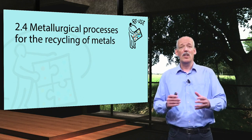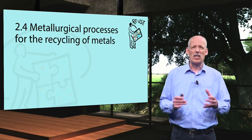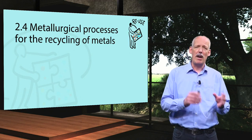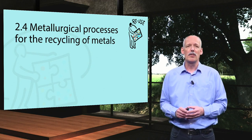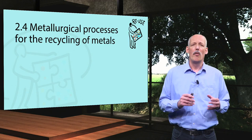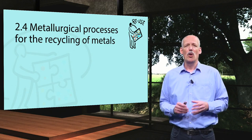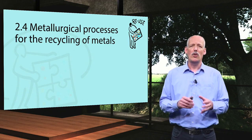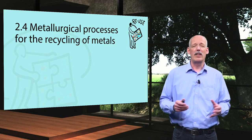Old scrap, such as scrap from end-of-life products, is quite complex scrap. This scrap can be refined via pyro, hydro and electrometallurgical methods, as discussed in this video. For metal containing waste and residues, both pyro and hydrometallurgical technologies are used, and their combinations depend on the type of feed.